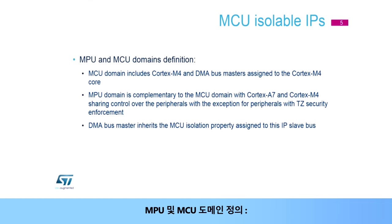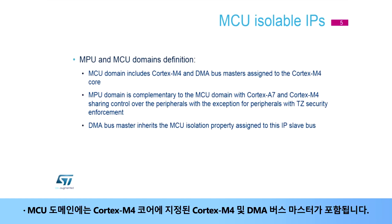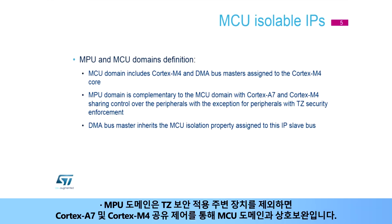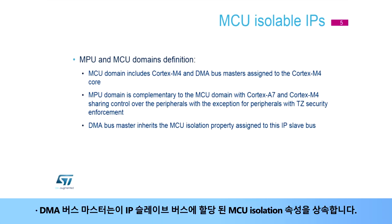MPU and MCU Domains Definition: The MCU domain includes Cortex-M4 and DMA busmasters assigned to the Cortex-M4 core. The MPU domain is complementary to the MCU domain, with Cortex-A7 and Cortex-M4 shared control, with the exception of peripherals with TrustZone Security Enforcement. The DMA busmaster inherits the MCU Isolation property assigned to its IP slave bus.